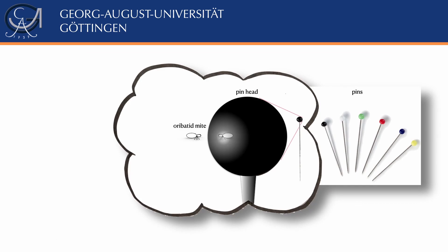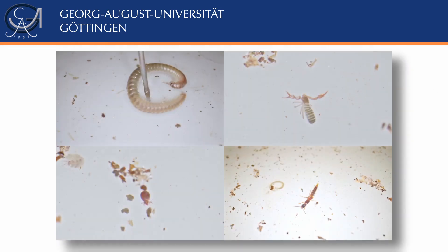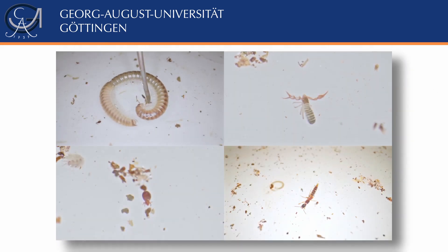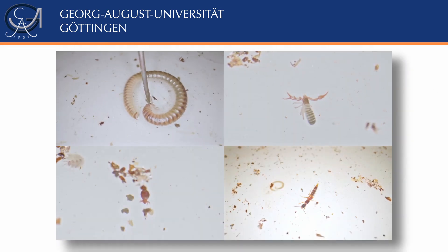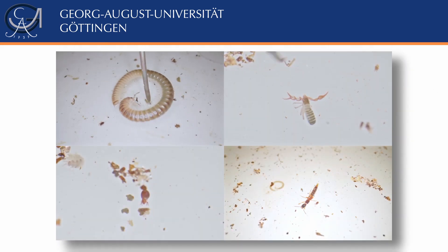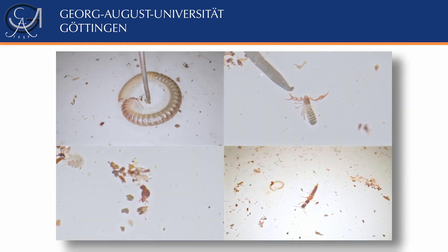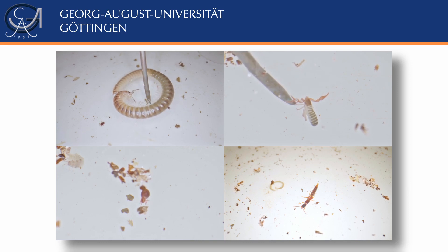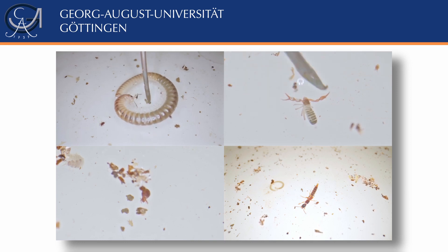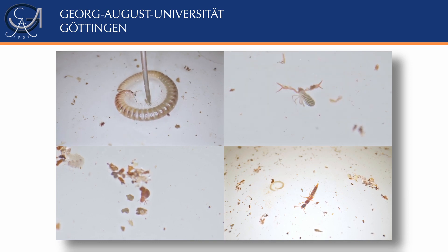Mesofauna are animals that are smaller than 2 mm. You cannot see them with your bare eyes, not to mention collect them directly from the field. You need to collect the animals with the environment in which they live and then extract them slowly from the soil.